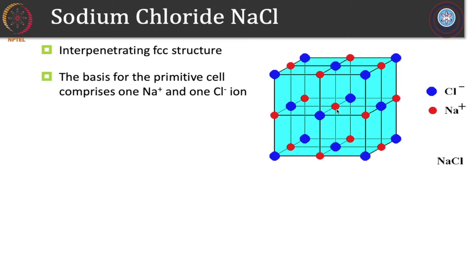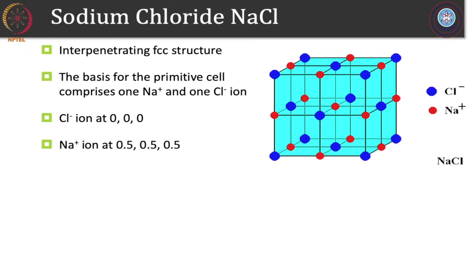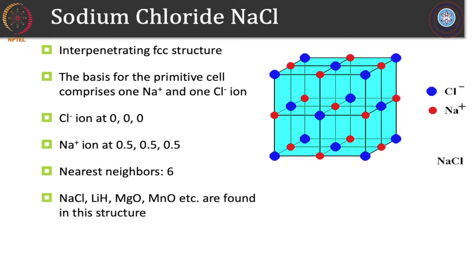Chlorine forms one FCC structure and sodium forms another FCC structure, and they are offset by the (1/2, 1/2, 1/2) vector. The basis for one primitive cell comprises one sodium ion and one chlorine ion: chlorine at (0, 0, 0) and sodium at (1/2, 1/2, 1/2). If we consider one sodium ion, there are six nearest chlorine neighbors, and similarly six nearest sodium neighbors to each chlorine ion. Compounds such as lithium hydride, manganese oxide, and magnesium oxide are found in this sodium chloride structure.